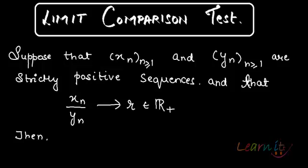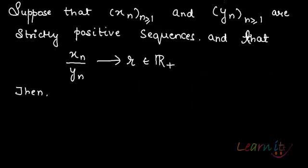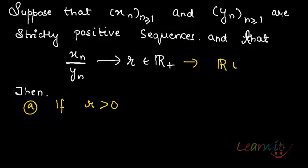There are two things that can happen. Number one, if r is greater than zero — now r belongs to R-plus, which essentially is R union zero, so it includes all positive numbers as well as zero. When you talk about R-plus-plus, that means strictly positive real numbers. So there are two possibilities: either r is strictly greater than zero, or r equals zero.